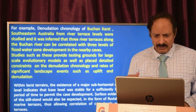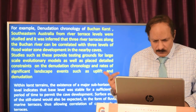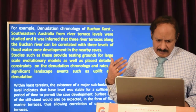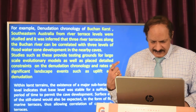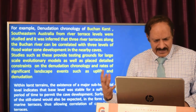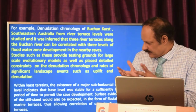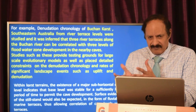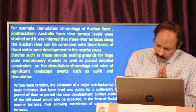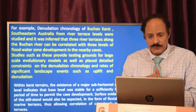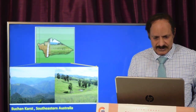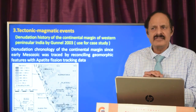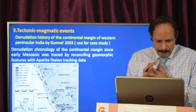Similarly, denudation chronology in Buchan Karst in southeastern Australia, New South Wales, was deduced from river terrace levels by correlating the existence of major sub-horizontal cave level indicators and showing evidence of stillstand in the form of blue-hole and marine terraces, correlating cave levels with terraces. This is another important case study of how denudation chronology was deduced from the Australian Buchan karst.